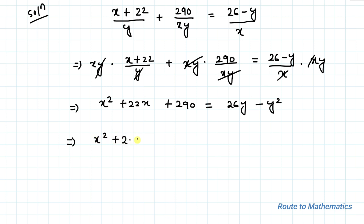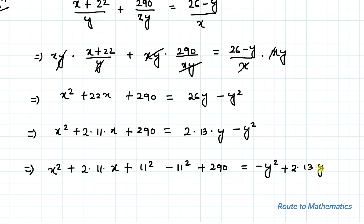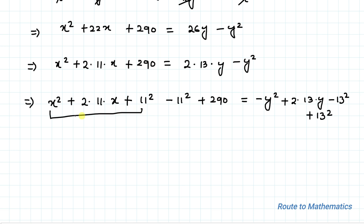In the next step we rearrange this equation. We write x² + 2·11·x, and to apply the (a + b)² algebraic identity we add and subtract 11², giving x² + 2·11·x + 11² - 11² + 290. On the right-hand side we have -y² + 2·13·y, and we subtract 13² and add 13².